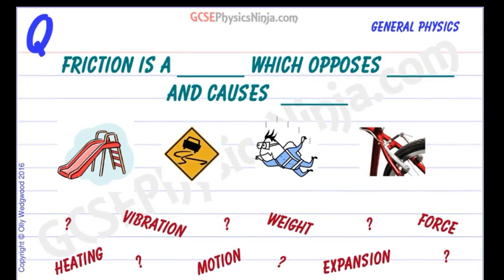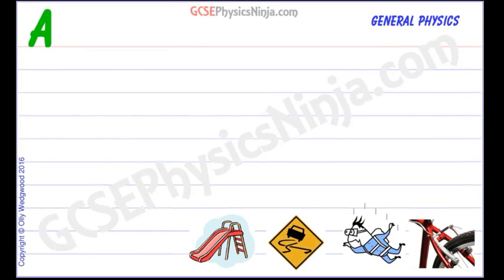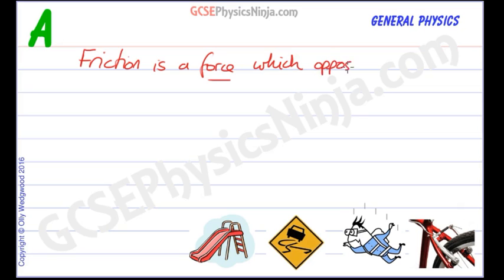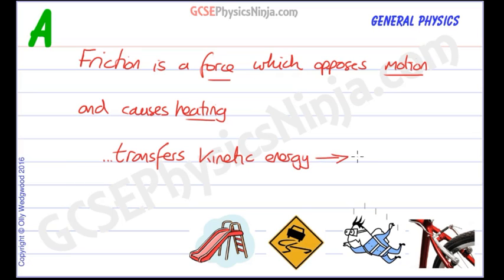So in this flashcard we can say: friction is a force which opposes motion and causes heating, because friction always converts kinetic energy into thermal energy. Underneath we can note that it transfers kinetic energy into thermal energy.